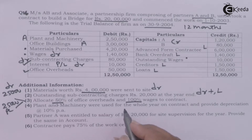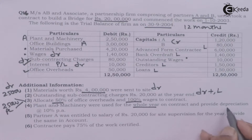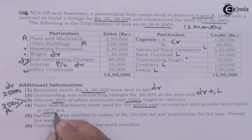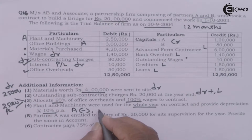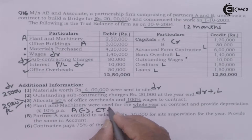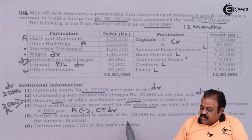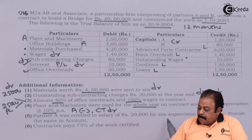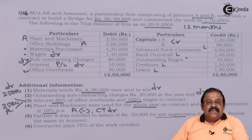Plant and machinery were used for the whole year on contract — provide depreciation at 10 percent. One effect: deduct 10 percent from plant and machinery on the asset side. The second effect: it will be debited to the contract account as depreciation allocation.